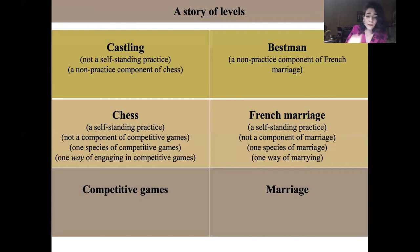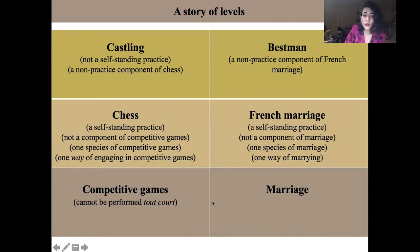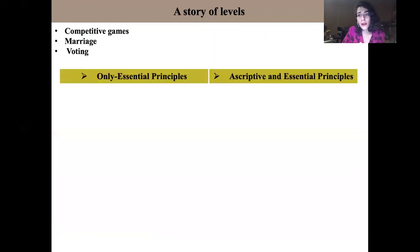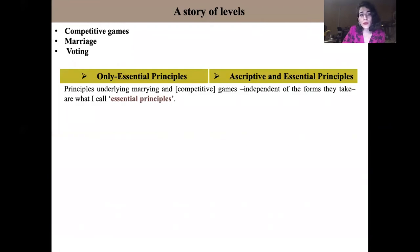Very roughly, we can say that chess and French marriage are on one level, while competitive games and marriage are on another level. Marriages cannot be performed to court, just as competitive games cannot be performed to court. In order for games and marriages to be performable, they need to be instantiated through a procedure which determines their realization in concrete manifestations. Principles underlying competitive games and marriage, independent of the forms they take — French marriage, Islamic marriage, and so on — are what I call essential principles.